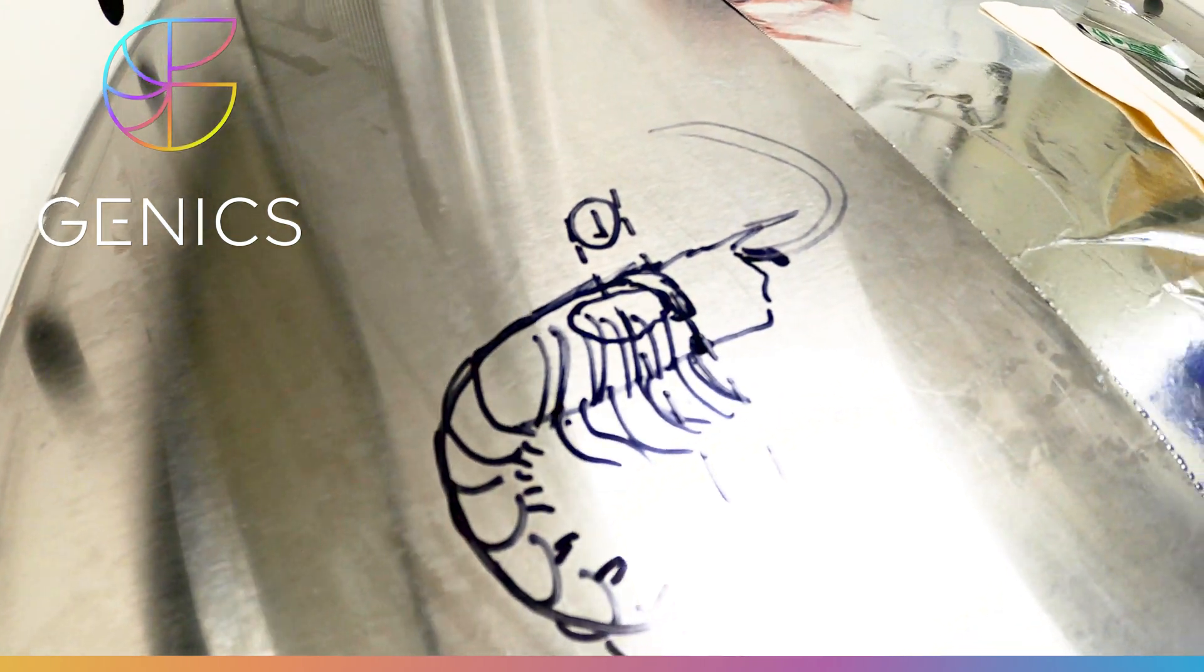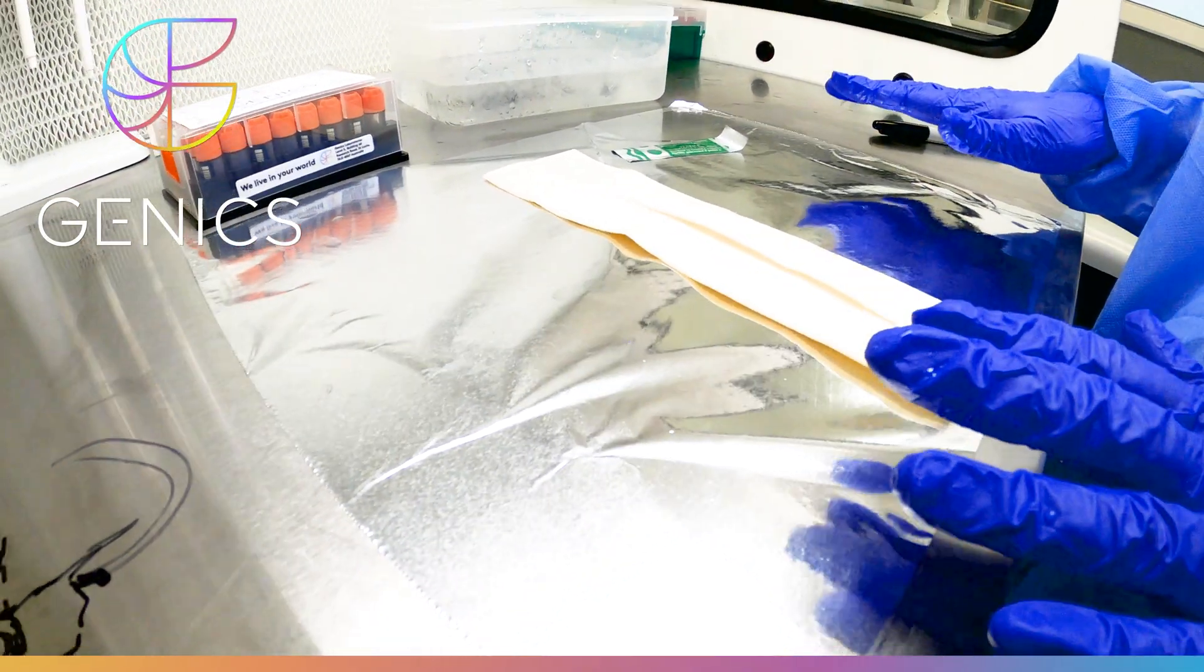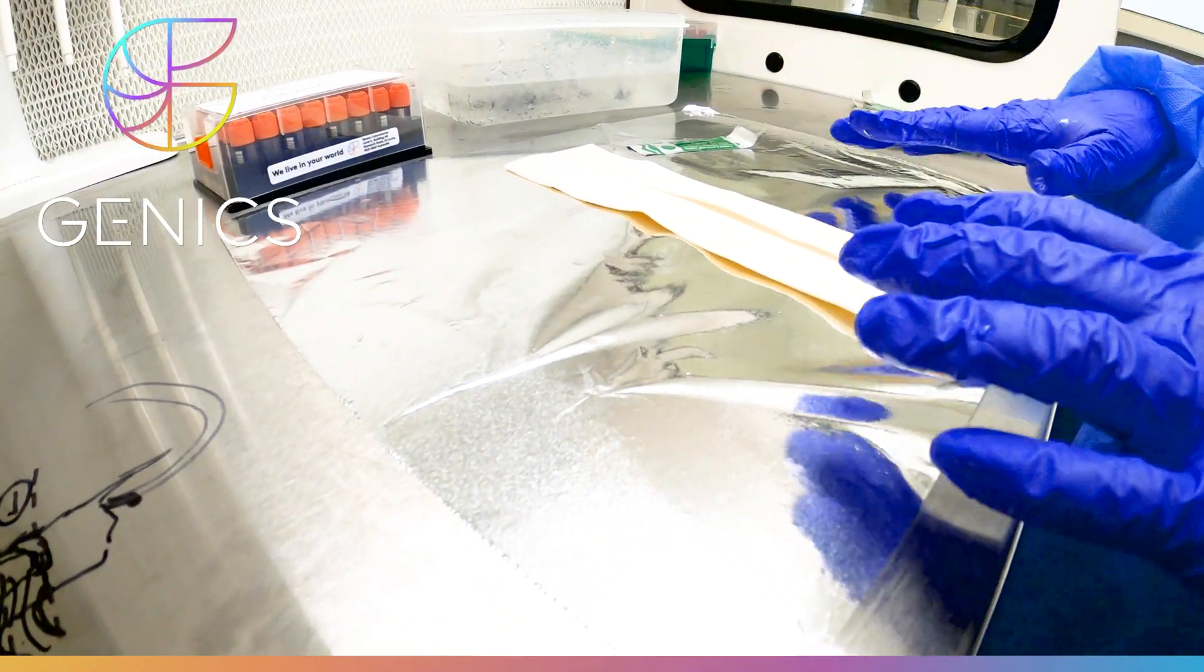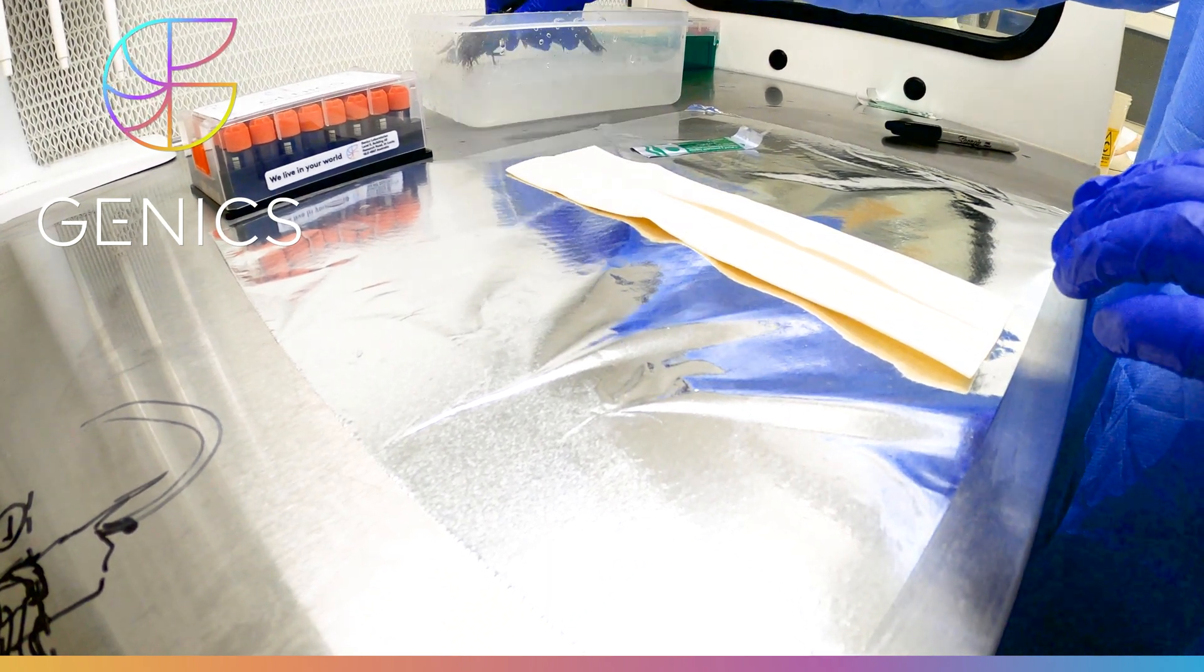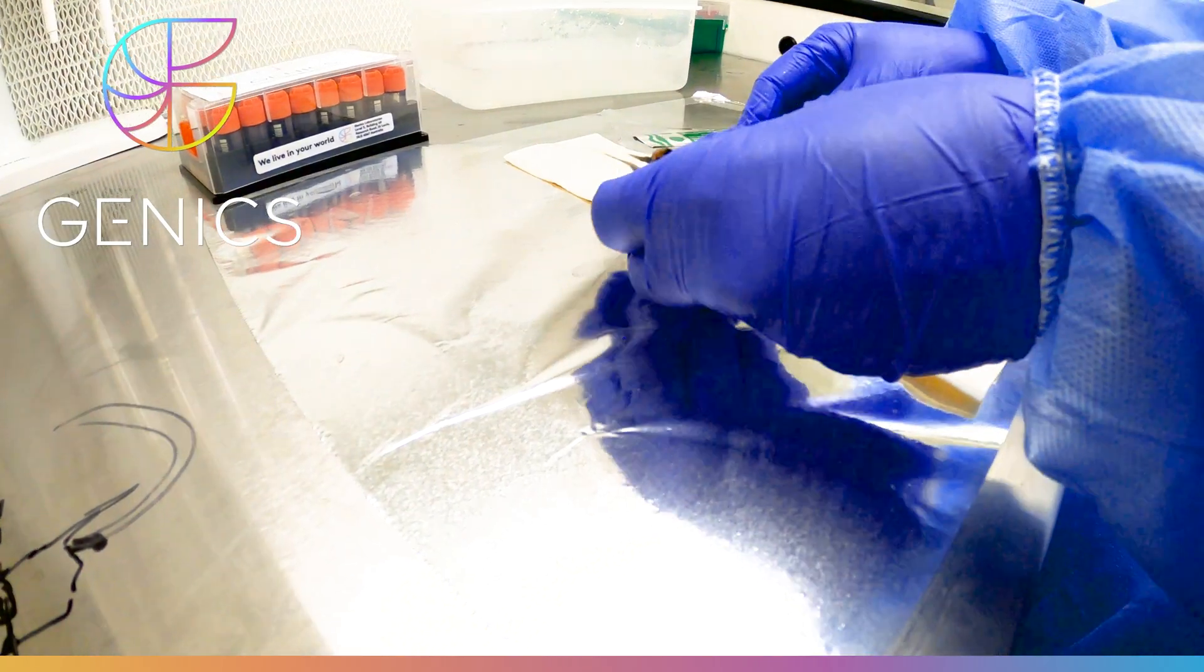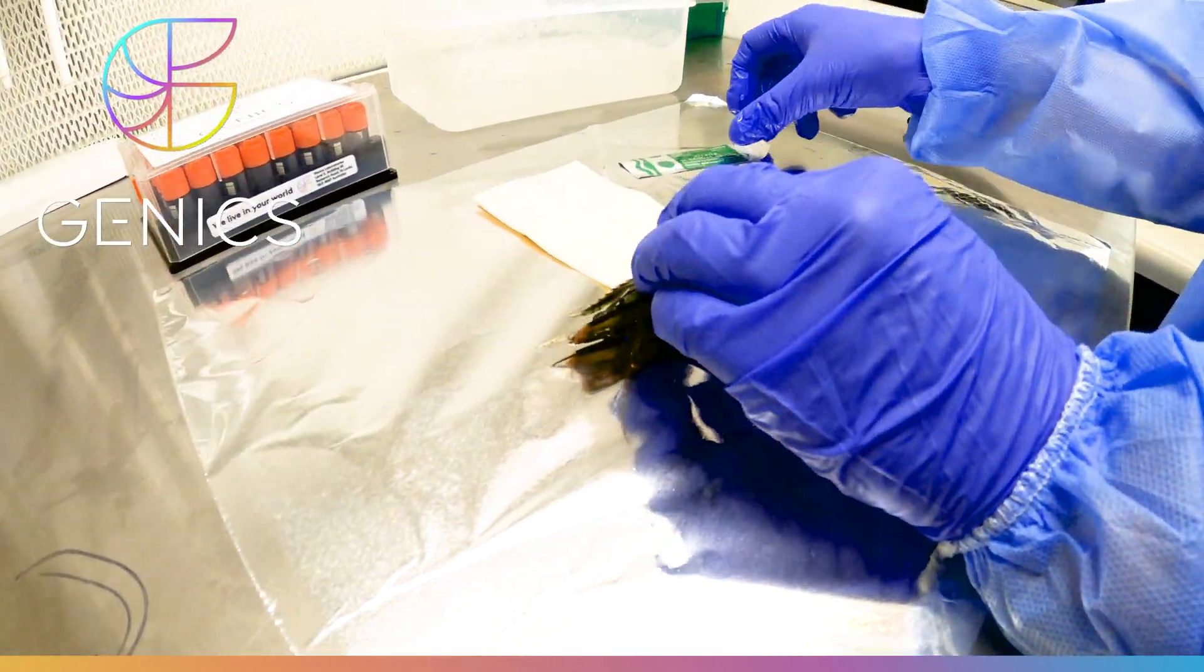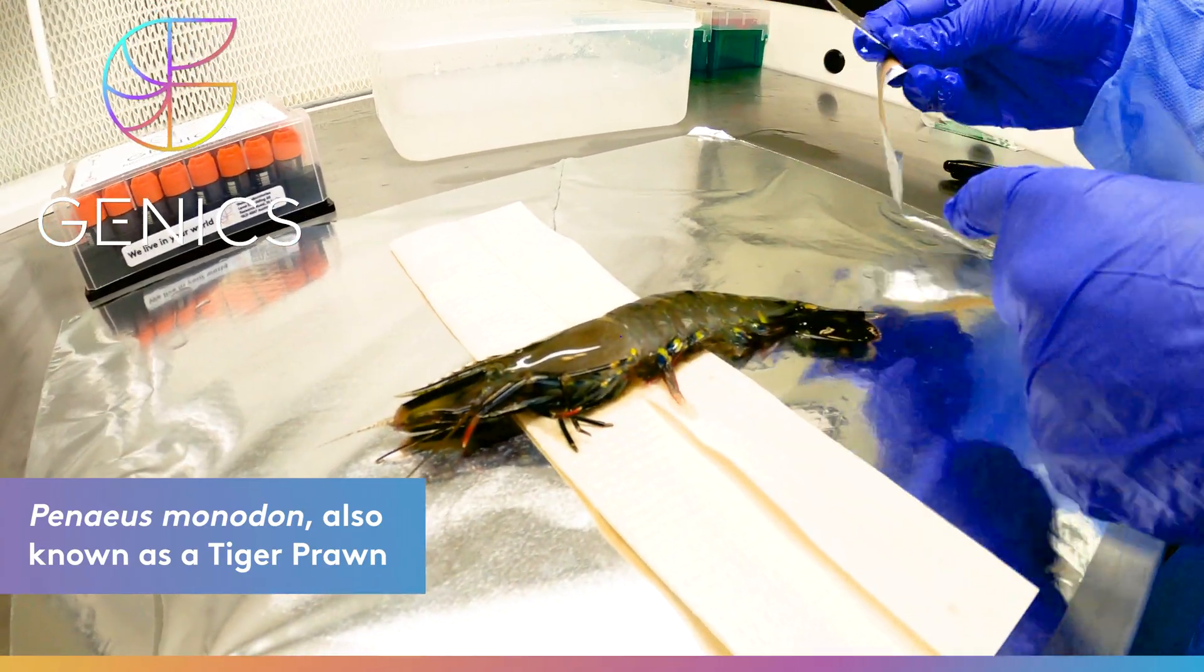So our shrimp is ready. Over here we have a piece of aluminum foil. This is a really easy way to create a sterile sampling surface for when you're doing the sampling. So we're going to take our shrimp out. These are Penaeus monodon. And we take our sterile sampling blade.